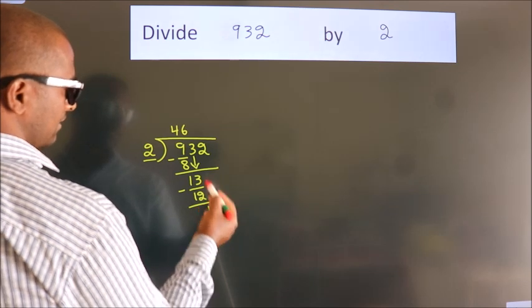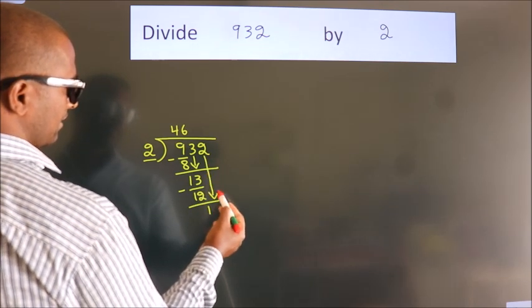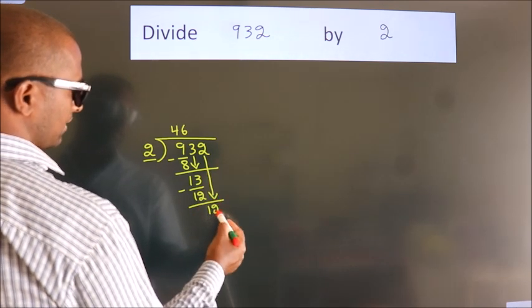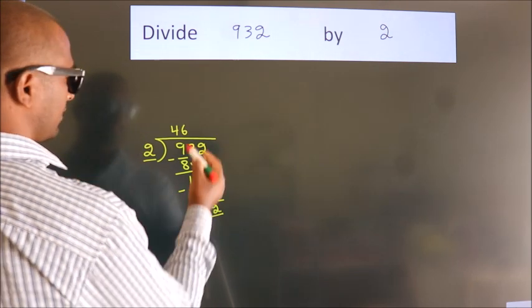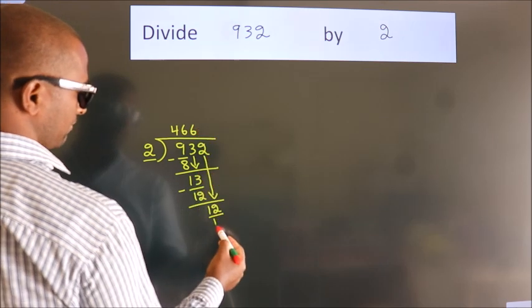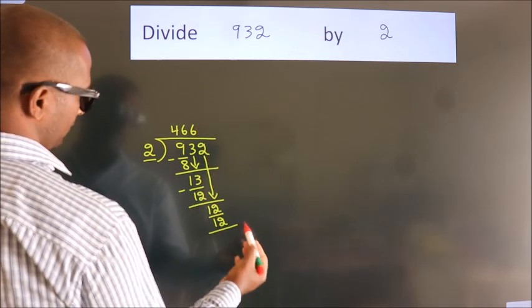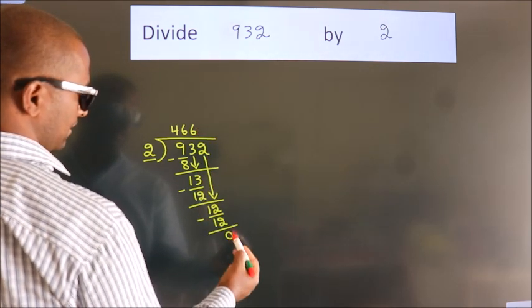After this, bring down the beside number. So 2 down, so 12. When do we get 12 in 2 table? 2 times 6 equals 12. Now we subtract. We get 0.